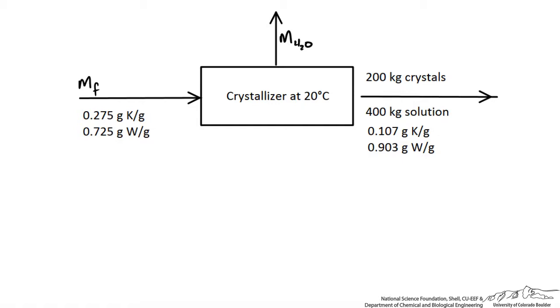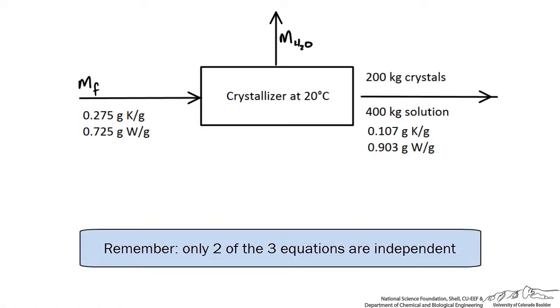We know that we could write two material balances, either an overall balance, a potassium dichromate balance, or a water balance.